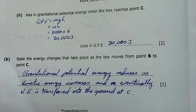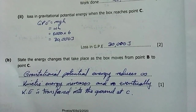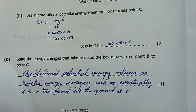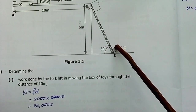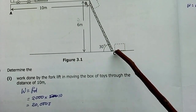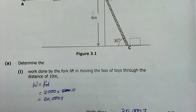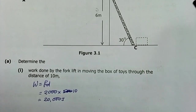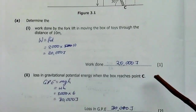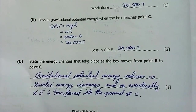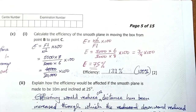Part b: state the energy changes as the box moves from point B to point C. Gravitational potential energy reduces as kinetic energy increases, and eventually kinetic energy is transferred into the ground and air. As the box gains velocity and touches the ground with force, energy is transferred from the box to the ground and the air.